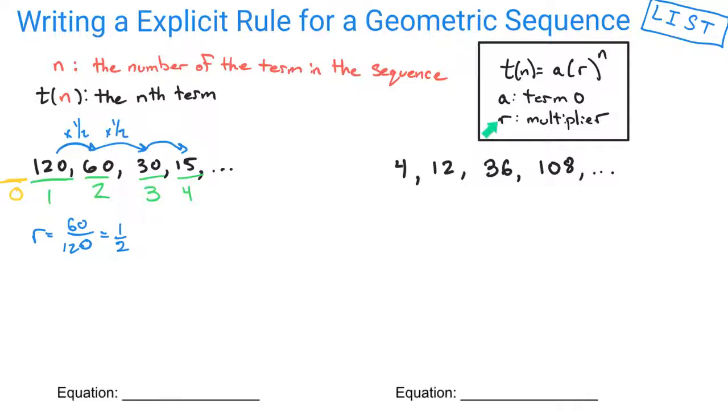Now you need to work backwards to figure out what term 0 is, so you can write that out. And so then we would double it, and that would be 240 in this scenario. So there we've got our term 0 and our multiplier.